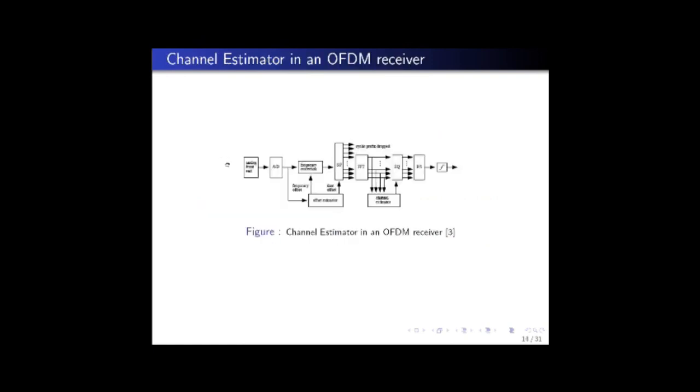This diagram shows where a channel estimator fits in at the receiver. In an OFDM receiver, you have the fast Fourier transform block which transforms symbols from the time domain into the separate subcarrier frequencies. The channel estimator gets inputs from the different subcarriers and estimates the attenuations or gains at these frequencies, and the output is fed back to the equalizer which nullifies the effects of the channel and tries to recover the original transmitted signal.